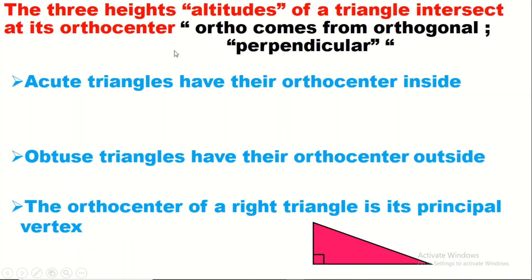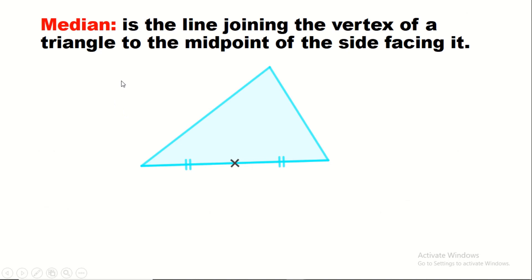What about a right triangle — where is its orthocenter located? In a right triangle, the two legs are perpendicular to each other. The height relative to the first leg is the second leg, and vice versa. These two heights intersect at the right-angle vertex, so the third height must pass through that same point. Therefore, the orthocenter of a right triangle is its principal vertex — exactly at the 90-degree angle.